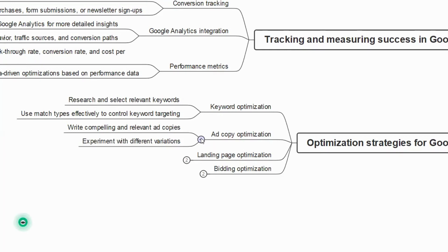For ad copy optimization, write compelling and relevant ad copies and experiment with different variations. When running an ad on Google, create 3 or 4 different copies so you can individually check how each one is performing.